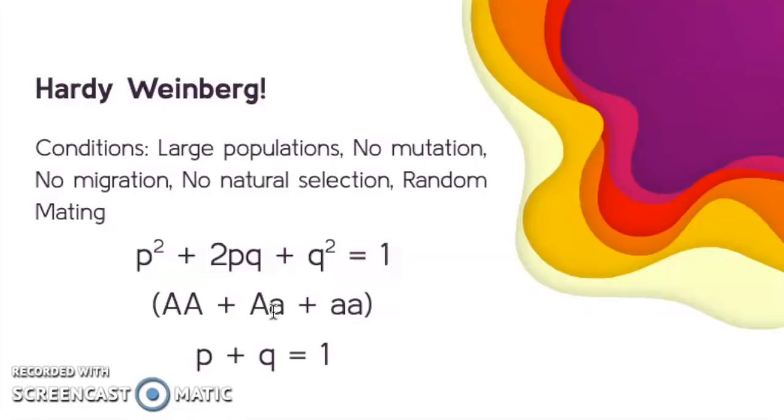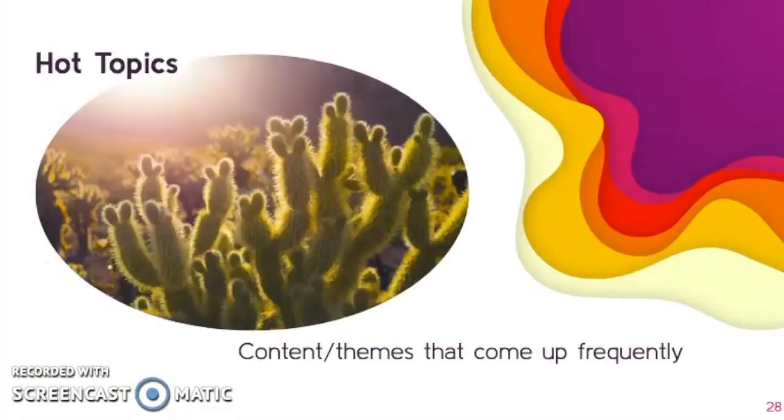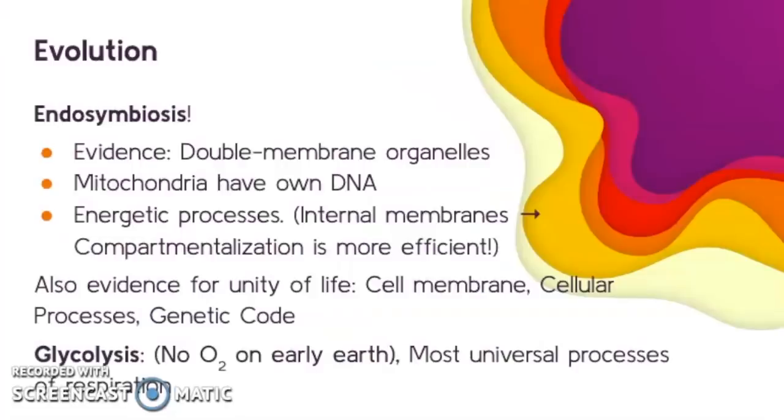P is the frequency of the dominant allele totally, so all of the big A's. Q is the frequency of the recessive allele, all of the little a's in our population, and you can use both or either one of these two equations to calculate. I'm going to go through a few content and themes that come up really frequently. I'm going through this information really fast to make sure that you guys have enough time to commit to your own studying, but please follow along and make sure you go back and watch other videos if you feel like that's necessary.